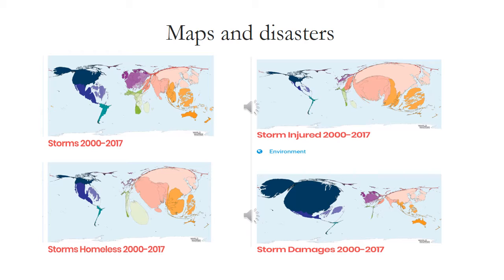And finally, the bottom right map shows the absolute value of damages. And this is very obvious that damages in absolute terms, in monetary terms, are much higher in developed countries. Because in these countries, the costs are much higher, so the cost of reconstruction of buildings damaged from a storm will of course be also higher compared to developing countries.